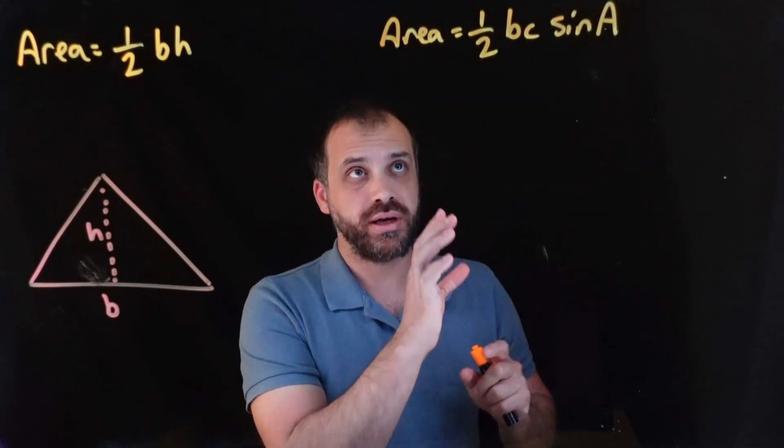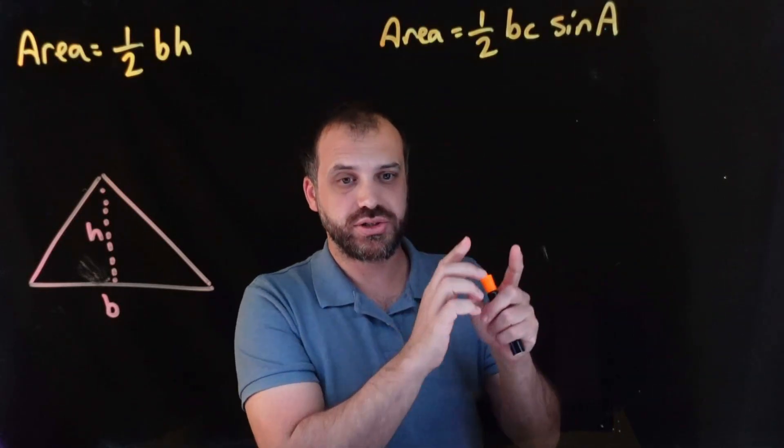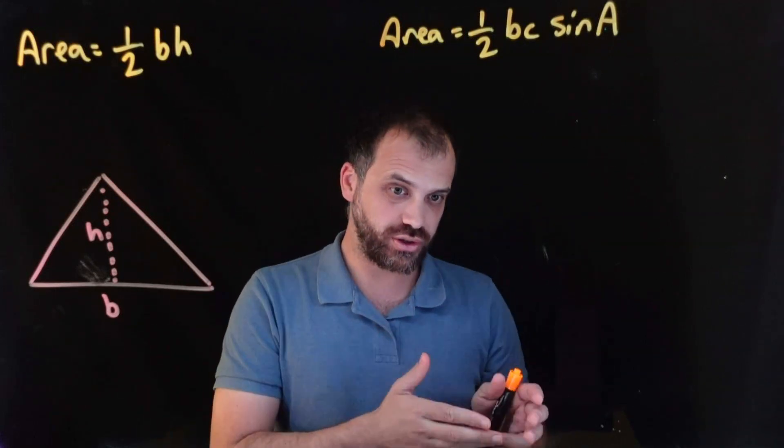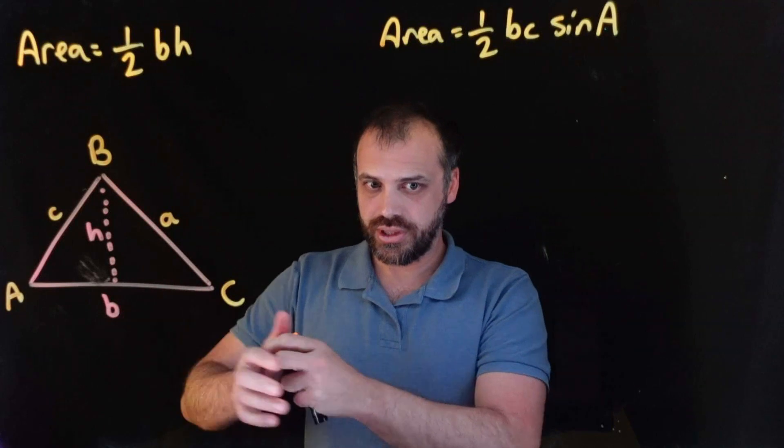This one right here, half B, C, sine A. And we use the same way that we've been labeling triangles for the sine and the cosine rule. Labeled. Now, you know I wouldn't feel right about just showing you a formula going,